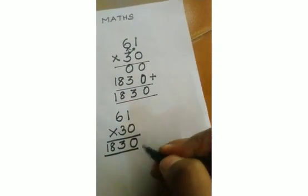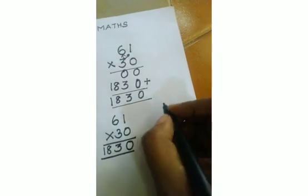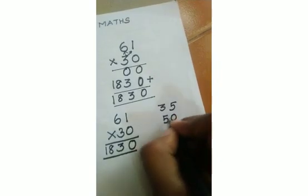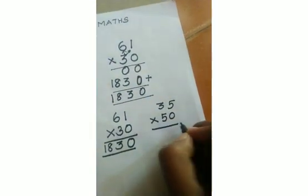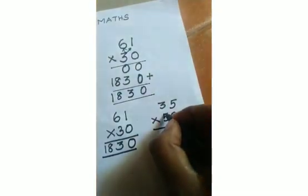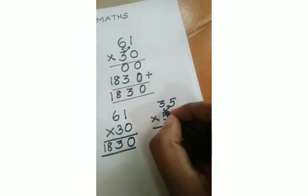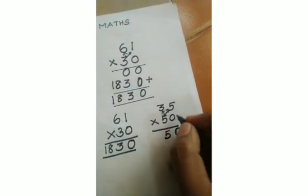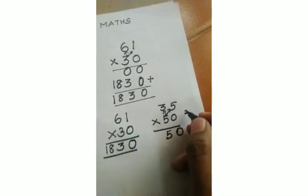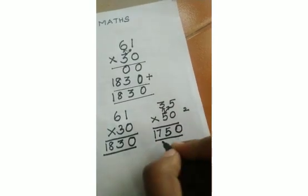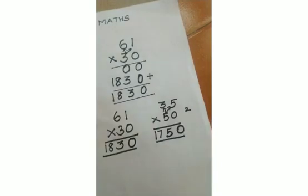One more example. Look at here: 35 into 50. So here, 0 is present, so you write 0, then you multiply 5 into 5 and 5 into 3. 5 fives are 25, so you write 5, then the remaining is 2. 5 threes are 15, 15 plus 2 is 17. So your answer is 1750. Thank you children, we will meet in the next class.